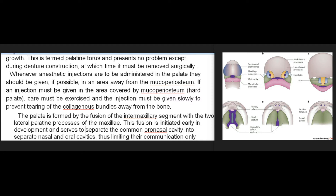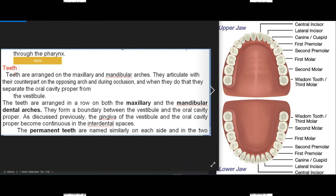This fusion is initiated early in development and serves to separate the common oronasal cavity into separate nasal and oral cavities, thus limiting their communication only through the pharynx. Teeth are arranged on the maxillary and mandibular arches; they articulate with their counterpart on the opposing arch, and during occlusion they separate the oral cavity proper from the vestibule.